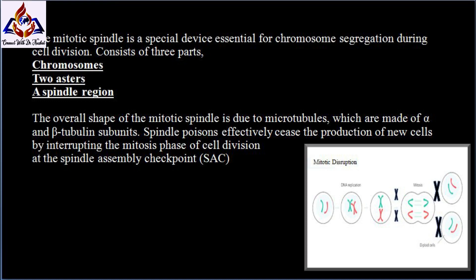Spindle poisons effectively cease the production of new cells by interrupting the mitosis phase of cell division at the spindle assembly checkpoint, that is SAC. Normally cells duplicate their genetic material and then produce two equal daughter cells. Tampering with this tightly monitored distribution system can result in the production of irregular chromosome content within each cell, commonly referred to as aneuploid.